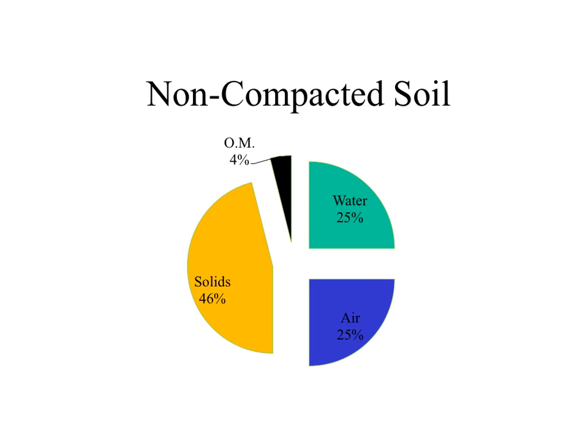Soil compaction occurs when the percent soil solids and the water holding pores increase while the percent air pores decrease, when compared to a non-compacted soil.